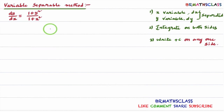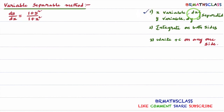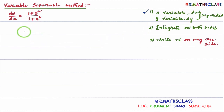To solve a differential equation by the variable separable method, we remember three things. First, separate x variable dx and y variable dy. You can see here how we separate x variable dx and y variable dy.